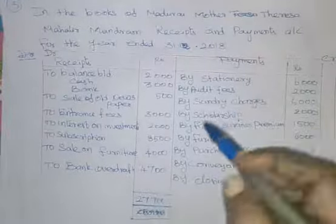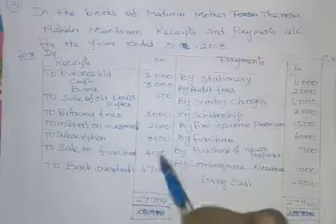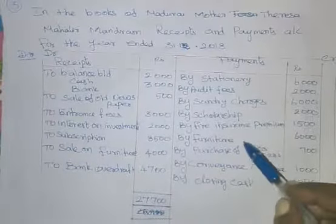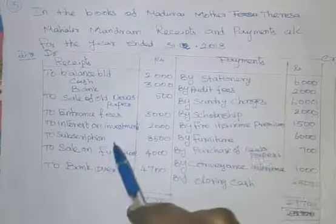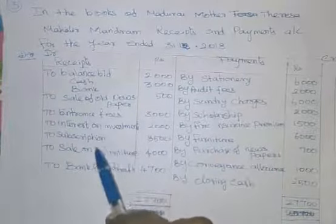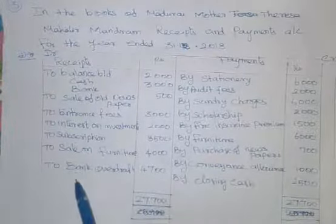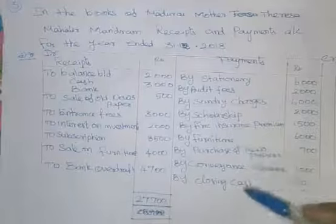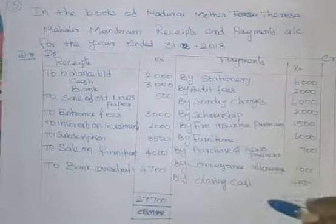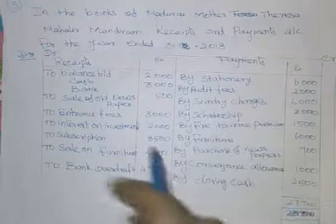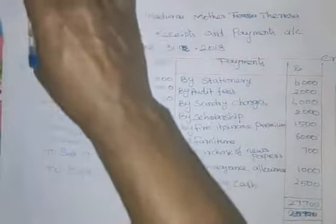All receipts are on the debit side. All expenditures are on the credit side.